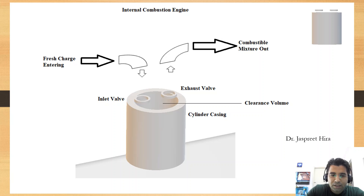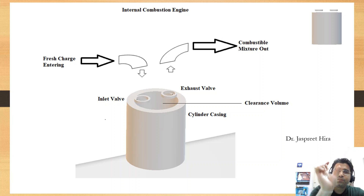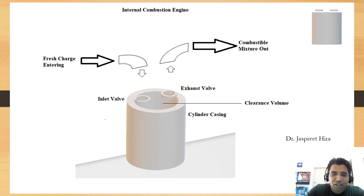I'll mark here — in this we have the cylinder casing, as you can see. Then above we have the clearance volume. Points one and two are the valves — I've shown the base of the valves, how they look. This is the inlet valve and this is the exhaust valve.